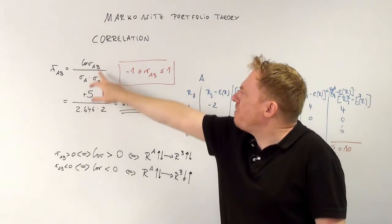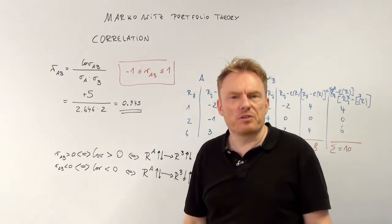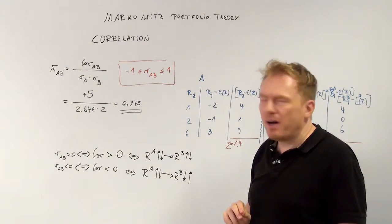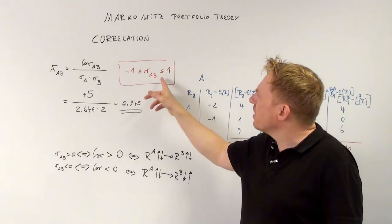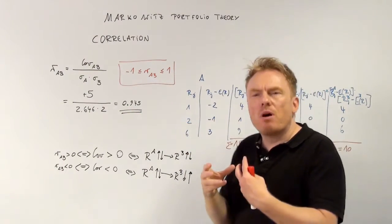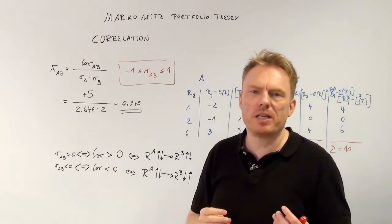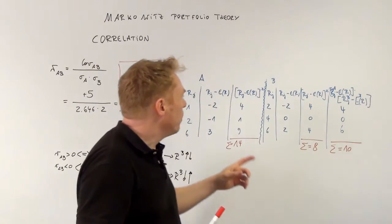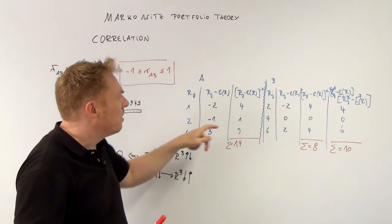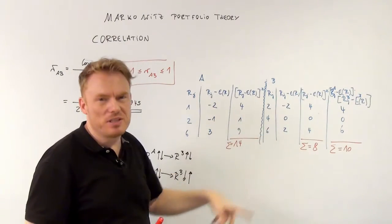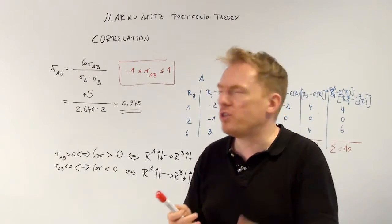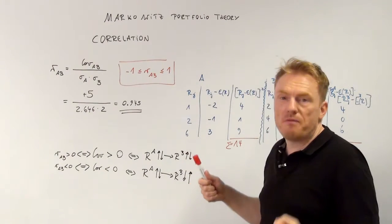The covariance of plus 5 divided by the product of the two standard deviations equals 0.945. Looking at this relative to the maximum upper bound of plus 1, we have a very strong relationship between Share A and Share B — which is true. As Share A rises 1%, 2%, 6%, so does Share B at 2%, 4%, and 6%. The relationship between those two shares is very strict; there is a very strong relationship.